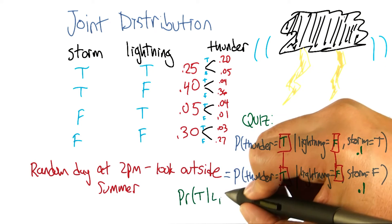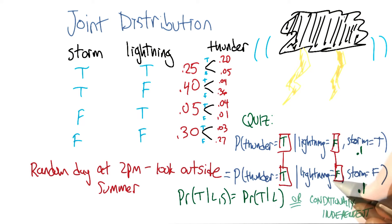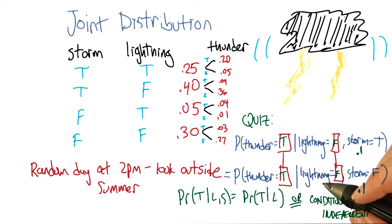That is to say that the probability of thunder given lightning and storm is equal to the probability of thunder given lightning, or that we have conditionally independent variables. Yes. That's right. Storm is conditionally independent of thunder given lightning.